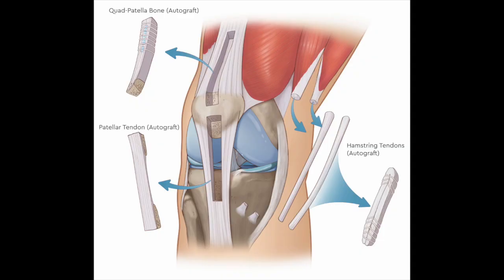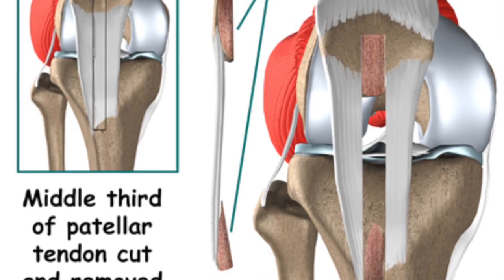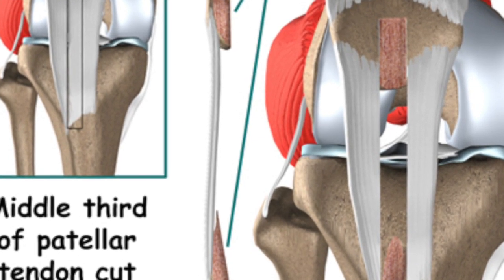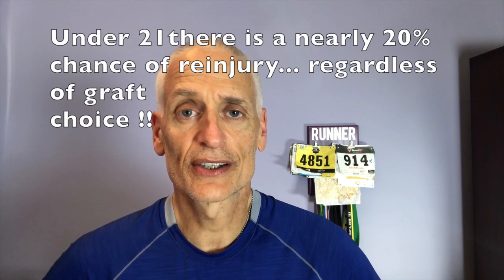For older teenagers and young adults, you're still going to stay away from allografts — they have an unacceptably high rate of failure in this group of patients. But now the bone-patella-tendon-bone graft is also a choice, similar to the hamstring and the quadricep tendons. You really can't go wrong with any of the grafts. There are staunch advocates of the bone-patella-tendon-bone graft, and some papers show the chance of tearing the graft again is slightly higher in the hamstring group.